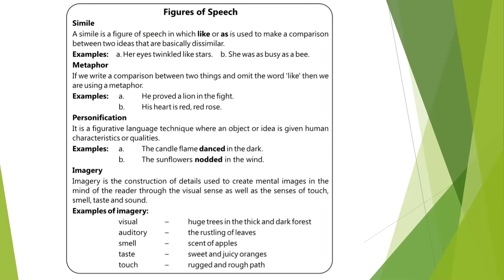Next is metaphor — the comparison between two things when we omit the word 'like' or 'as.' It is a direct comparison of apparently different but inwardly similar things. Examples: 'he proved a lion in the fight,' 'his heart is a red rose,' 'he has a heart of a lion,' 'he was the tiger of the match.' These are examples of metaphor where direct comparison is made.